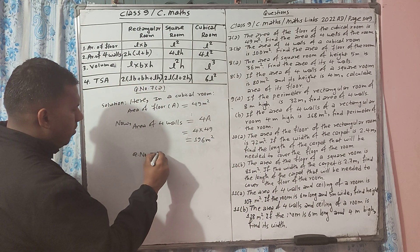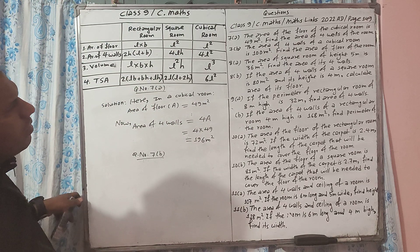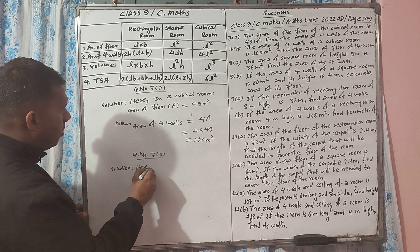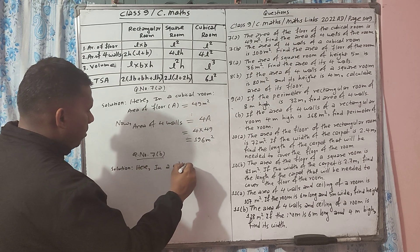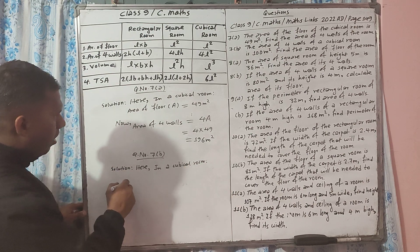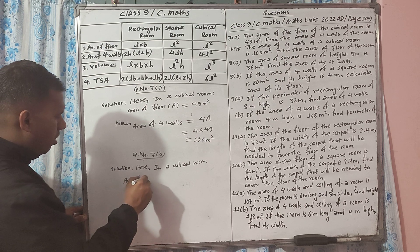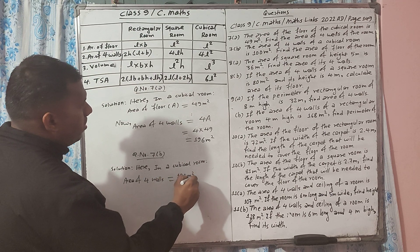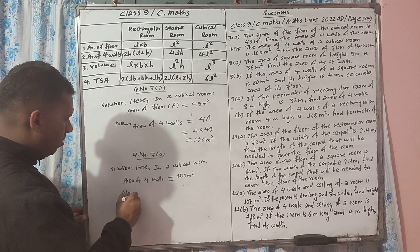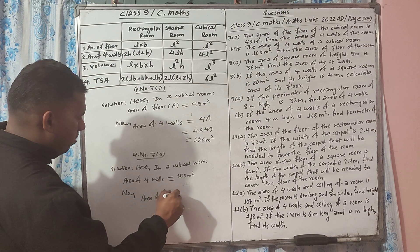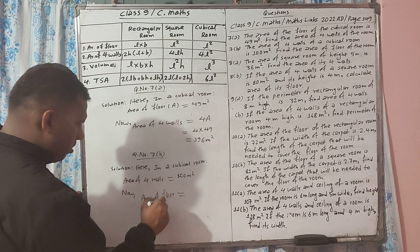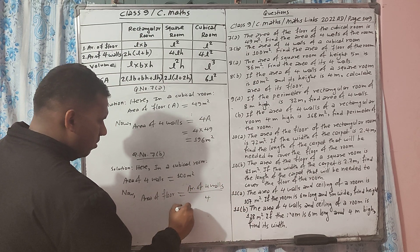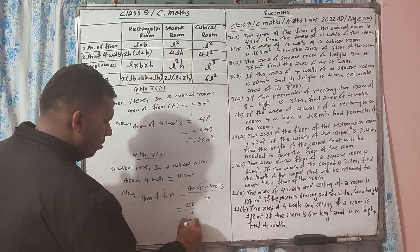Question number 7b. In a cubical room, the area of four walls is 100 meter square. We need to find the area of the floor. Area of floor equals area of four walls divided by four, which is 100 divided by 4, equal to 25 meter square.